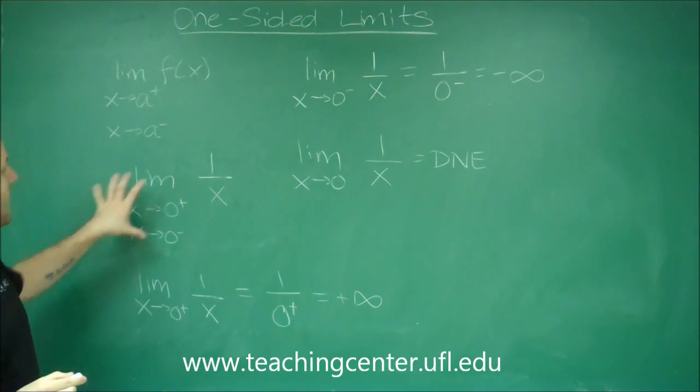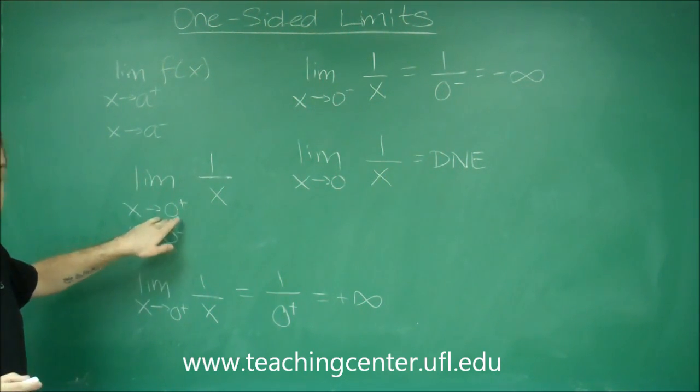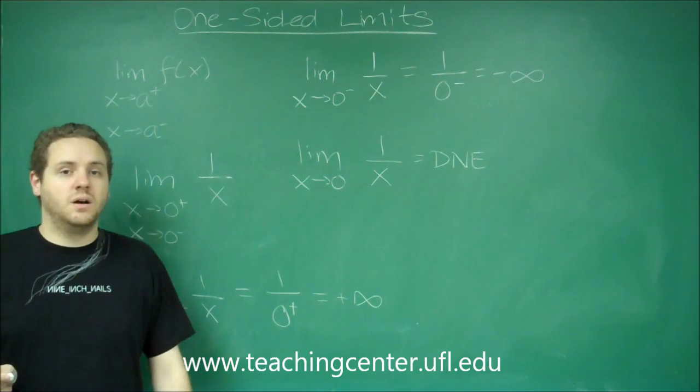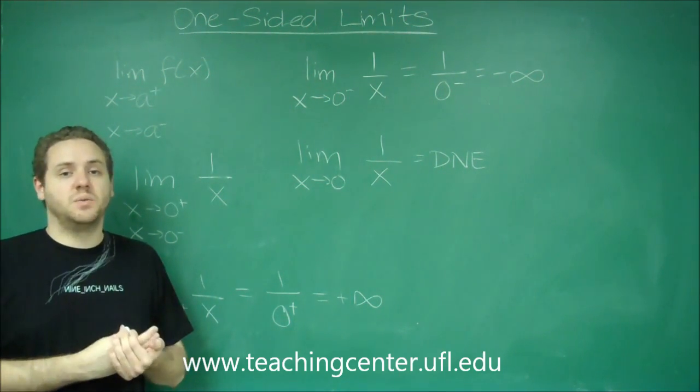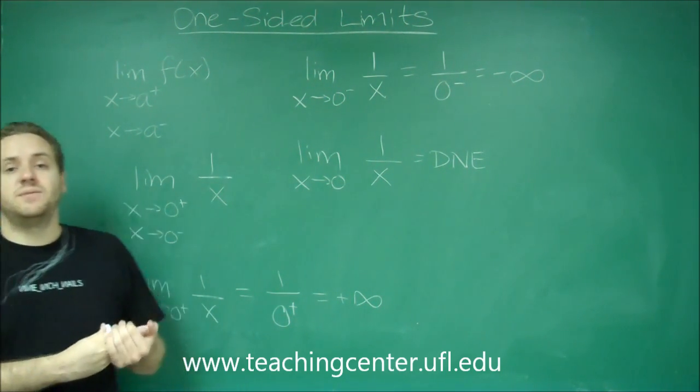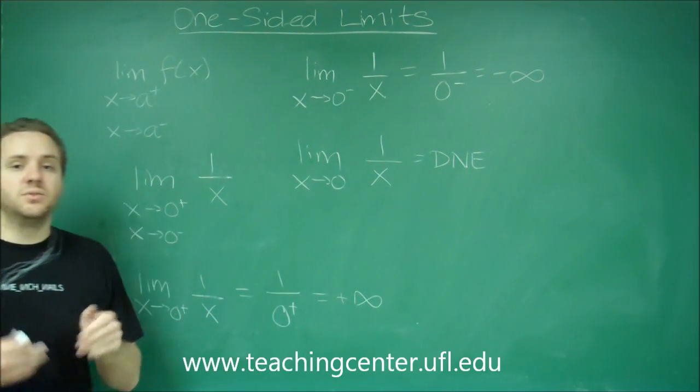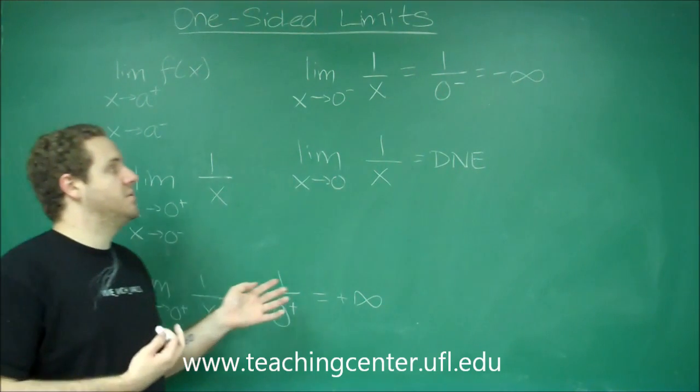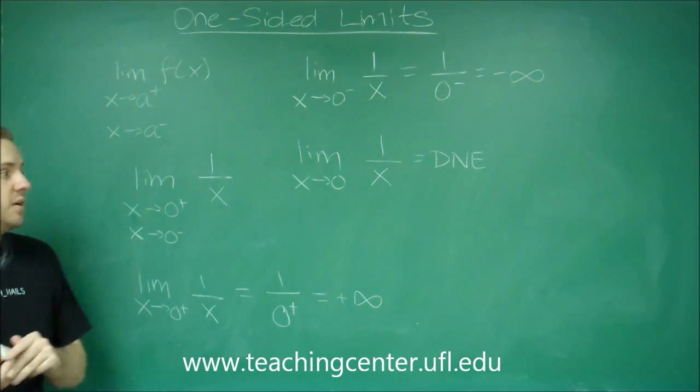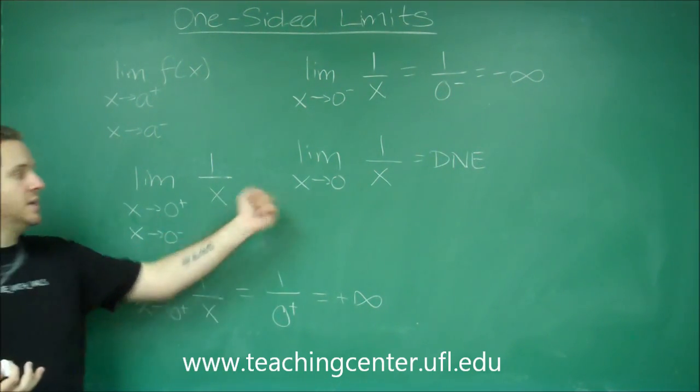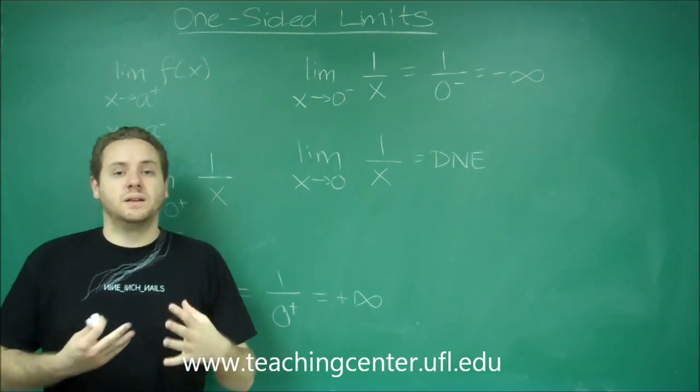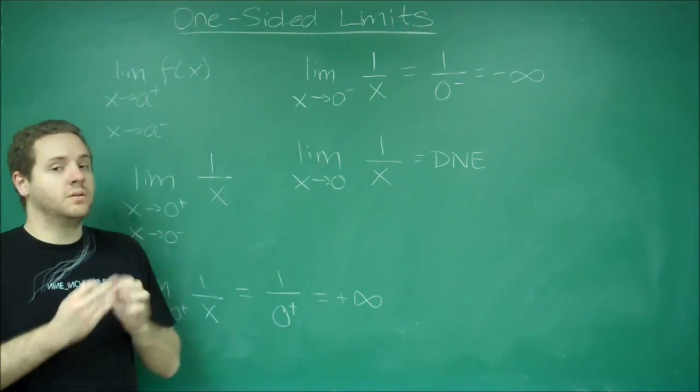So like I said, if this value does not make the function undefined or discontinuous in any way, you can just plug it in. If it does, you need to consider what having a number slightly to the right of your number and slightly to the left of your number would do to the function. And if those two things are not equal, then the limit at the number does not exist.